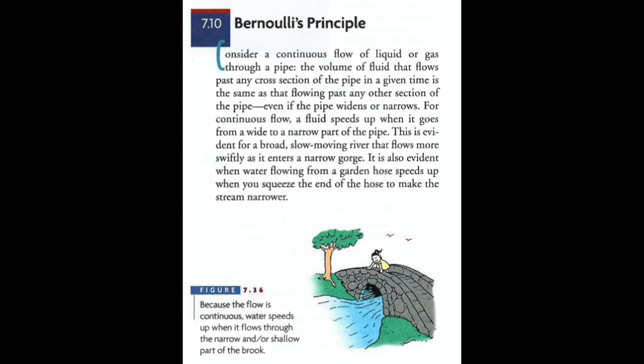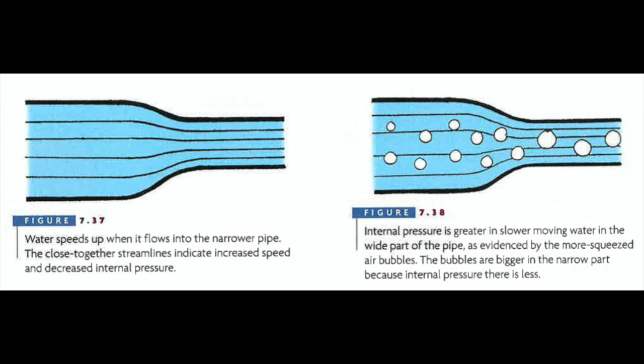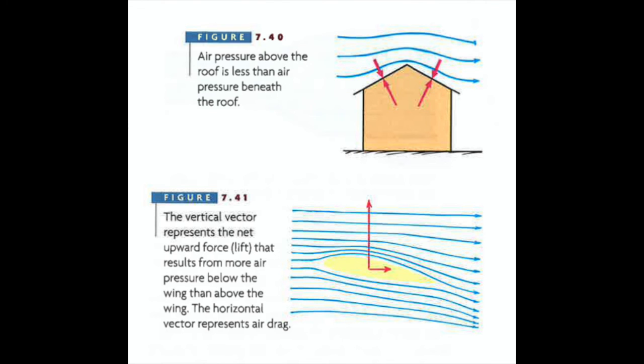Lastly, Bernoulli's principle, this one is quick, but basically Bernoulli's principle is that the speed of the fluid increases, the internal pressure of the fluid increases. But I want you to also think about how this works. If there's a strong wind, like on the roof in page 150, because the wind is moving fast above the roof, it creates less pressure above the roof. And the pressure from below the roof is greater, and so the roof can rip off.